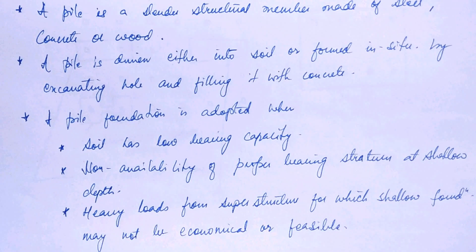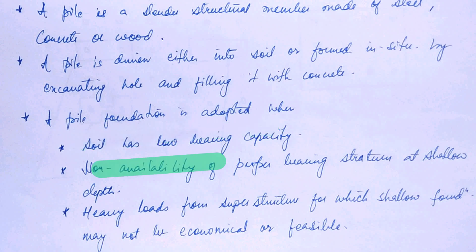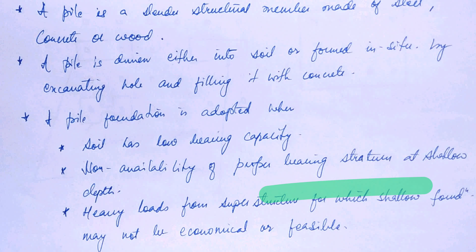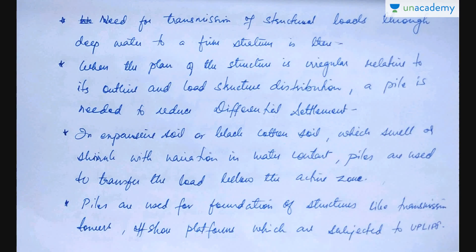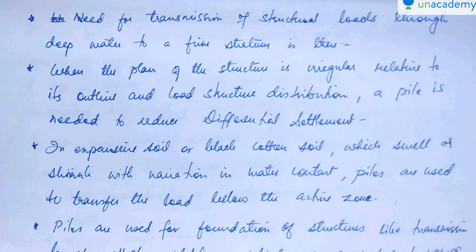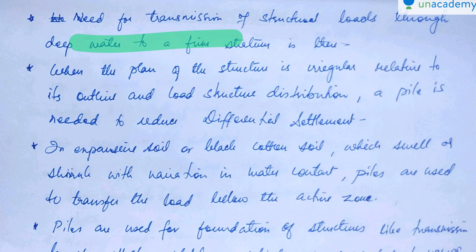A pile foundation is adopted when the soil has low bearing capacity, or there is non-availability of a proper bearing stratum at shallow depth, or heavy loads from the superstructure make a shallow foundation uneconomical or infeasible. It is also provided when there is a need for transmission of structural load through deep water to a firm stratum.